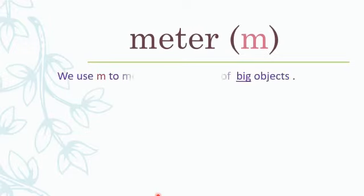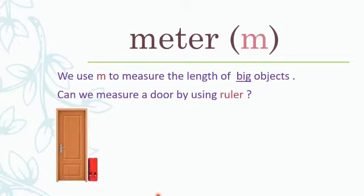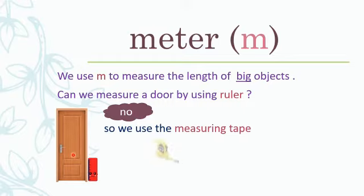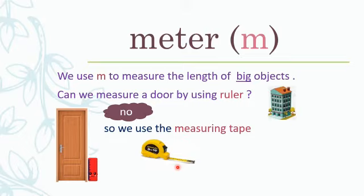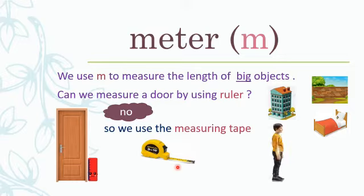The third unit of length in this lesson is meter, which is m. We use meter to measure the length of big objects. Can we measure a door using a ruler? Of course we cannot, because the length of this ruler is so small with respect to this big object, which is the door. So we use the measuring tape. I can use meter to measure the length of a building, the length of a wall, the length of a bed, my height, or the length of a tree.